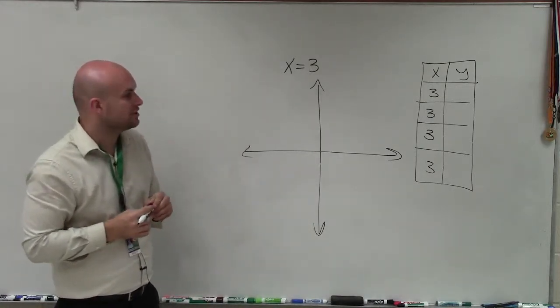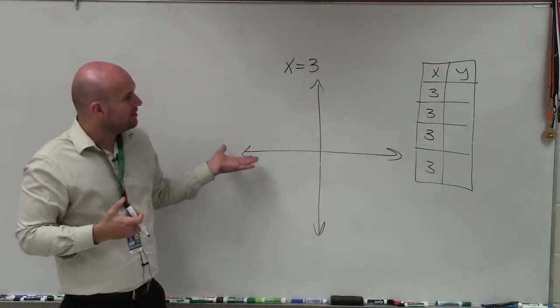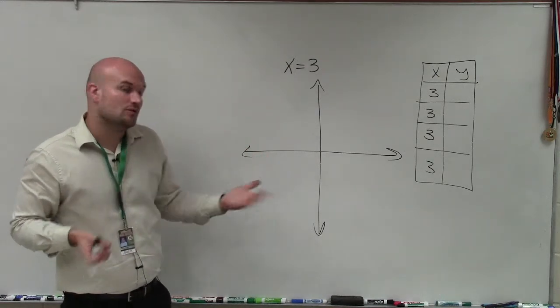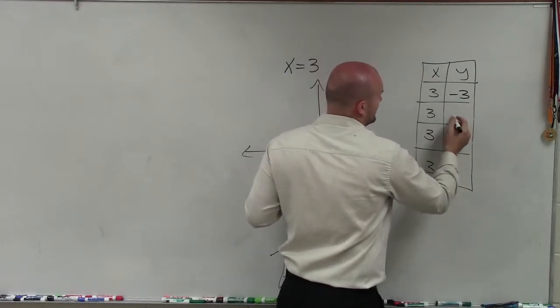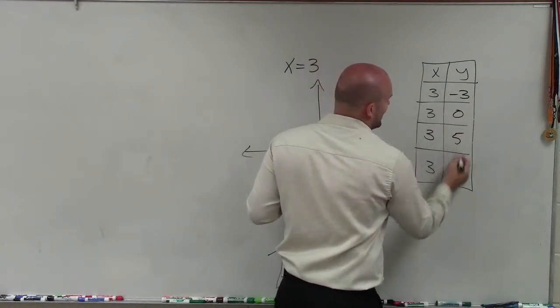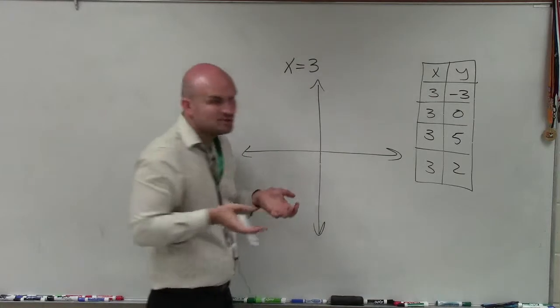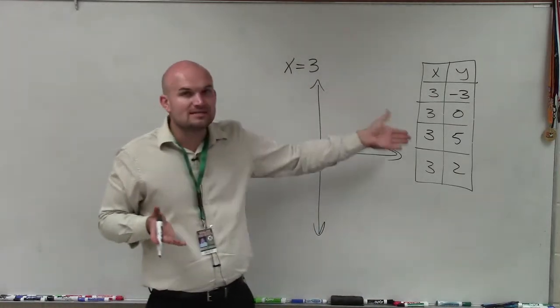Now I go ahead and look at the coordinates for y. Well, if x is always equal to 3, what does y equal? And that really turns into y can be any number we really want it to be. It could be negative 2, negative 3. It could be 0. It could be 5. It could be 2. You could pick arbitrary values for y. x is always going to equal 3.